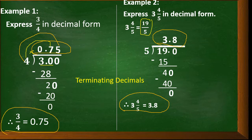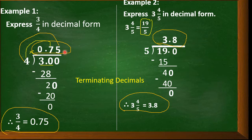Examples 1 and 2 are what we call terminating decimals. As you can observe, they terminate — meaning they have an end.